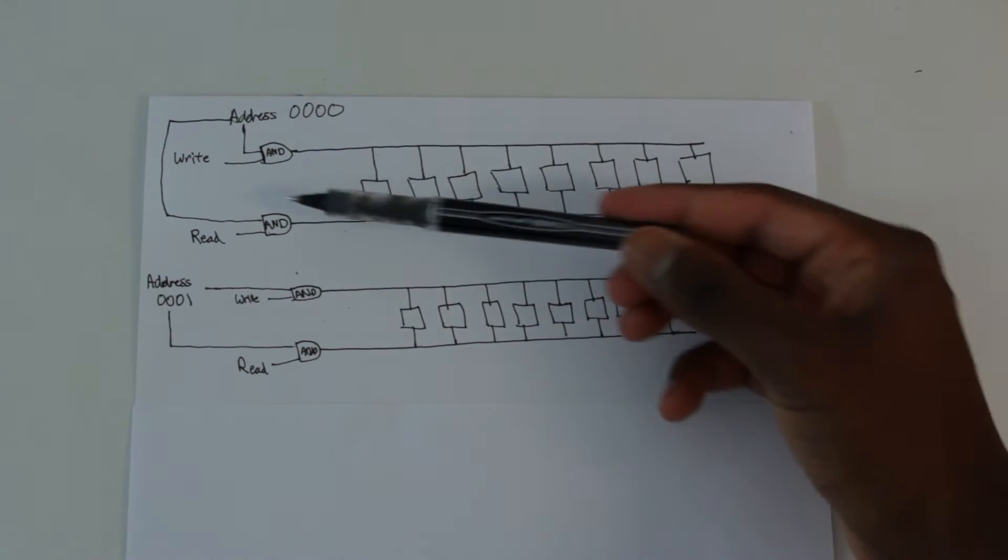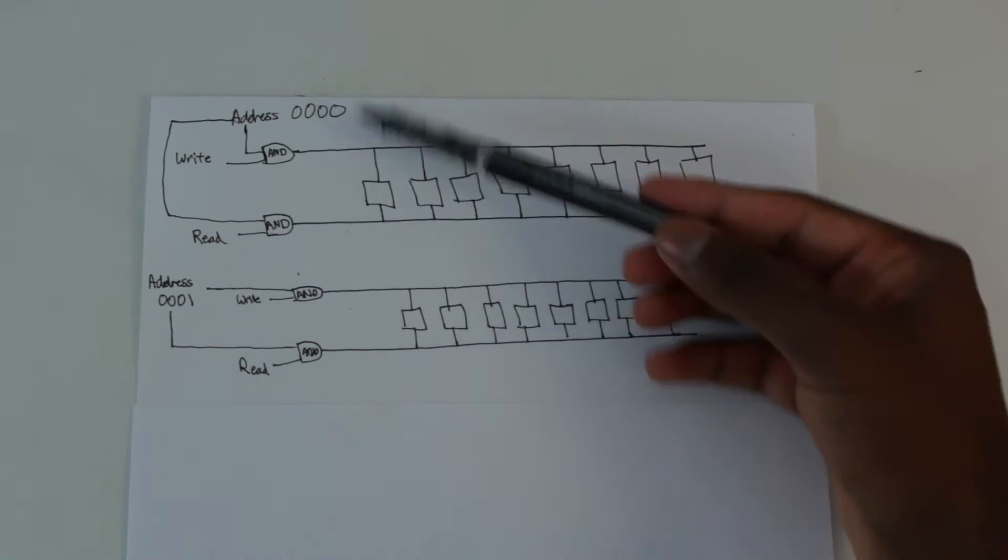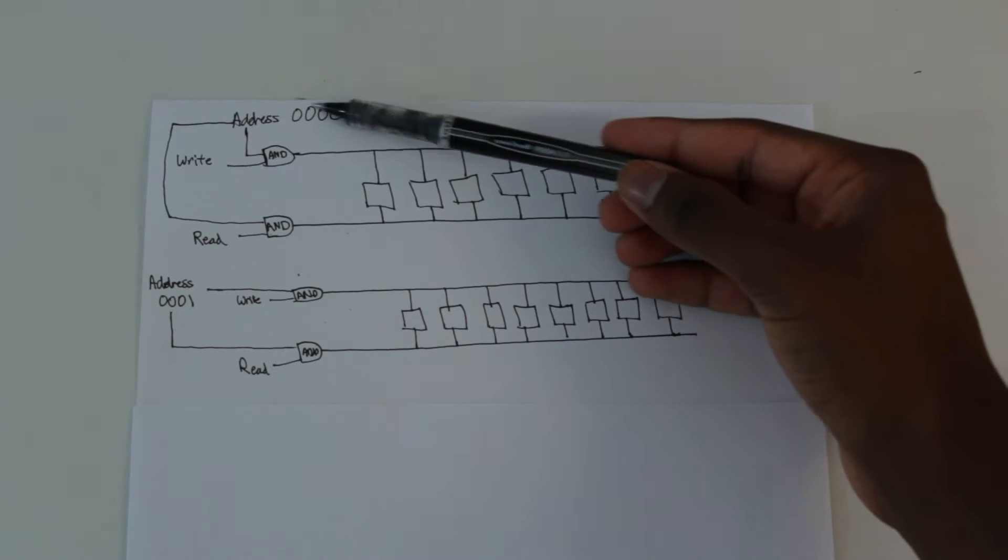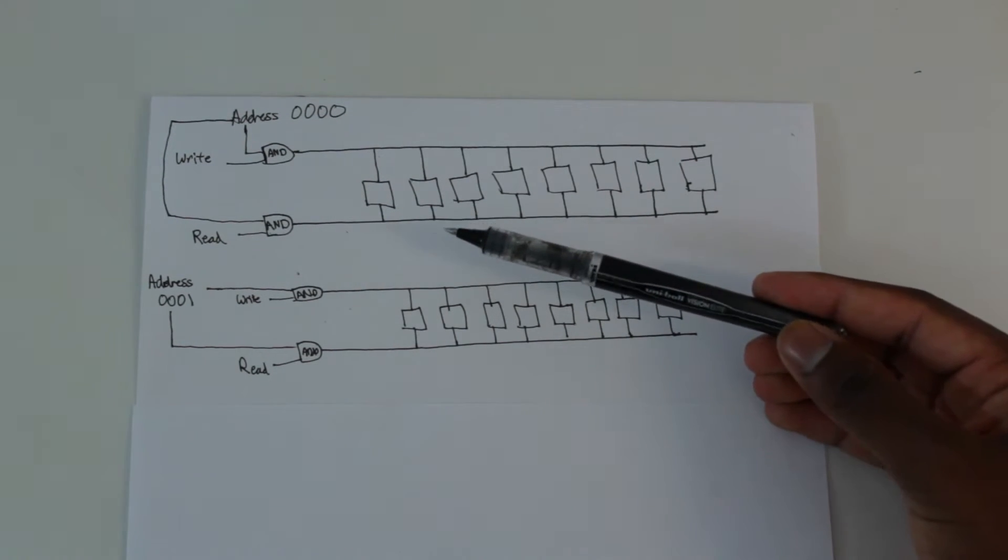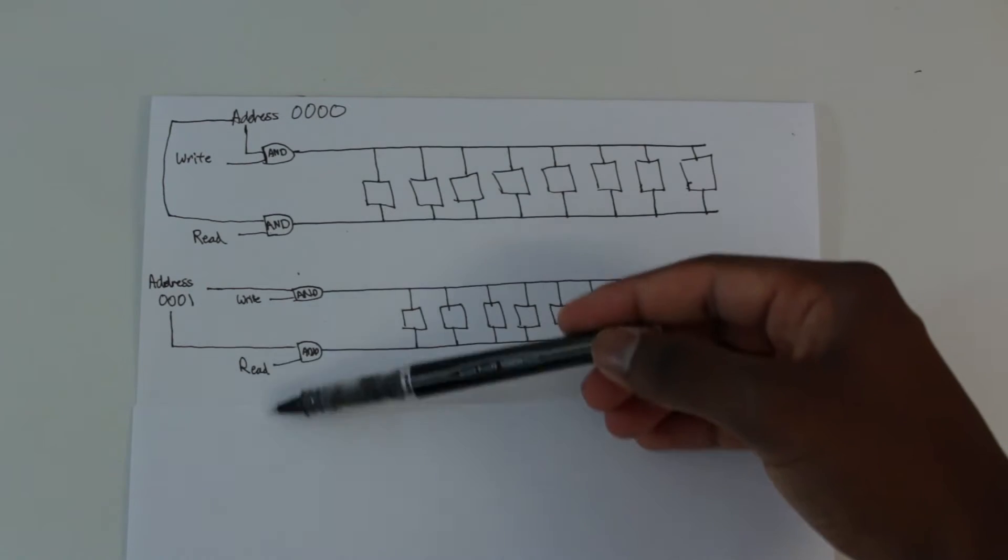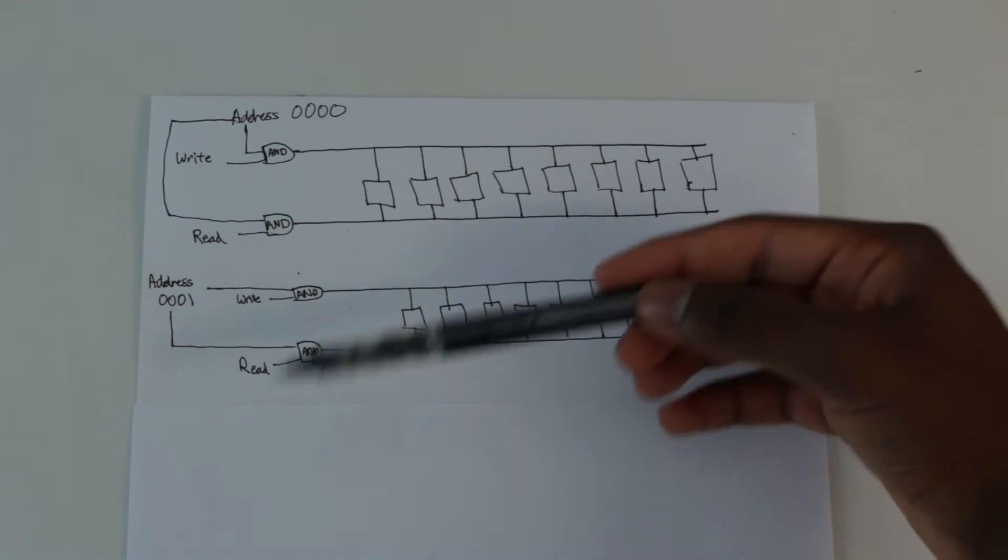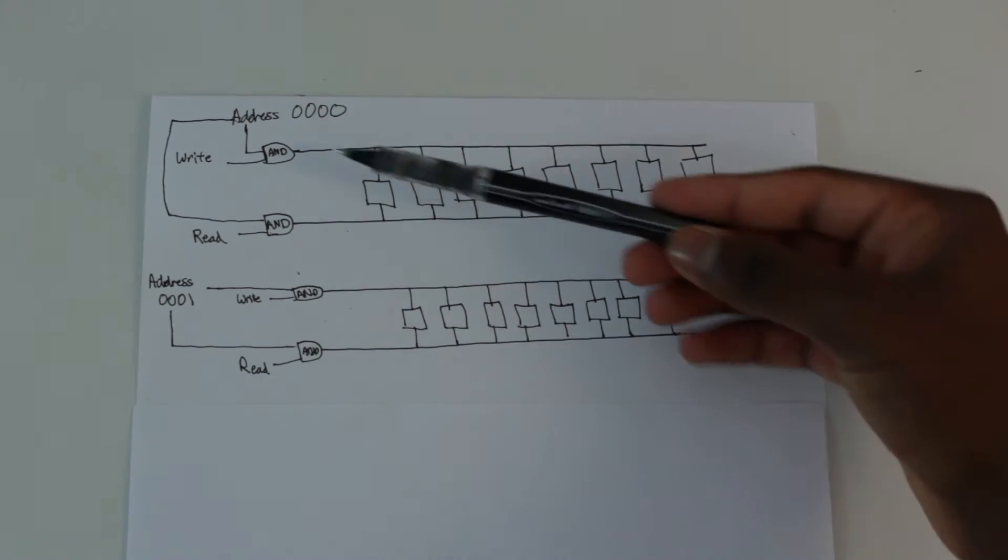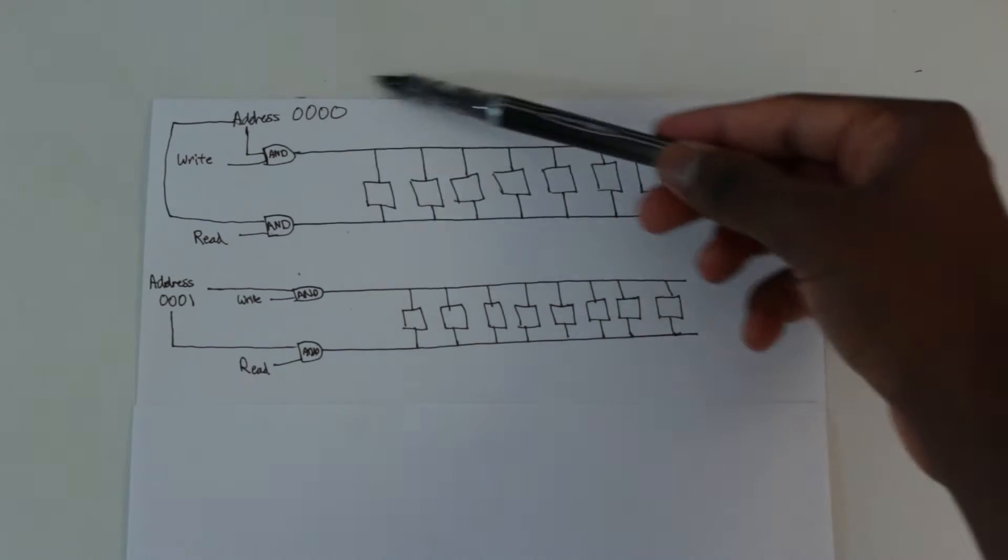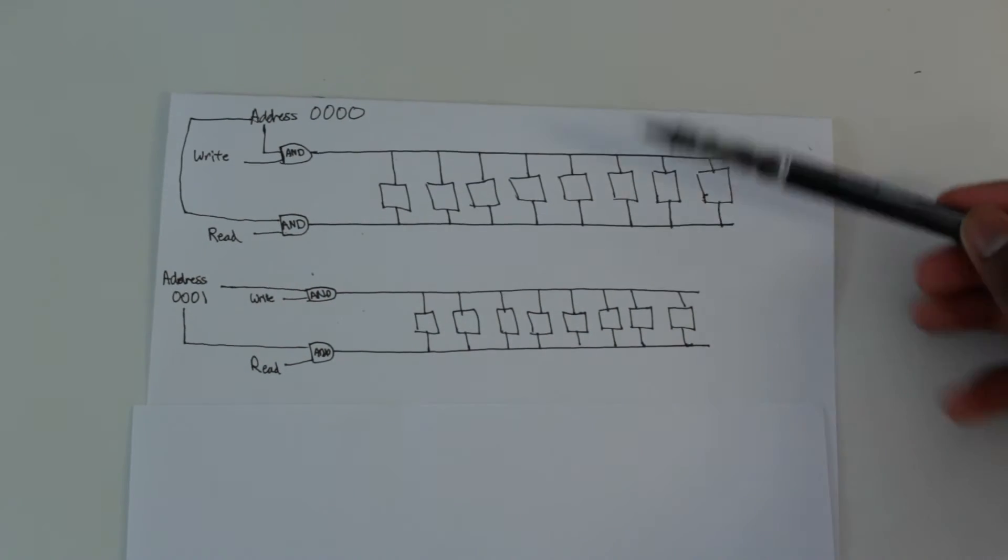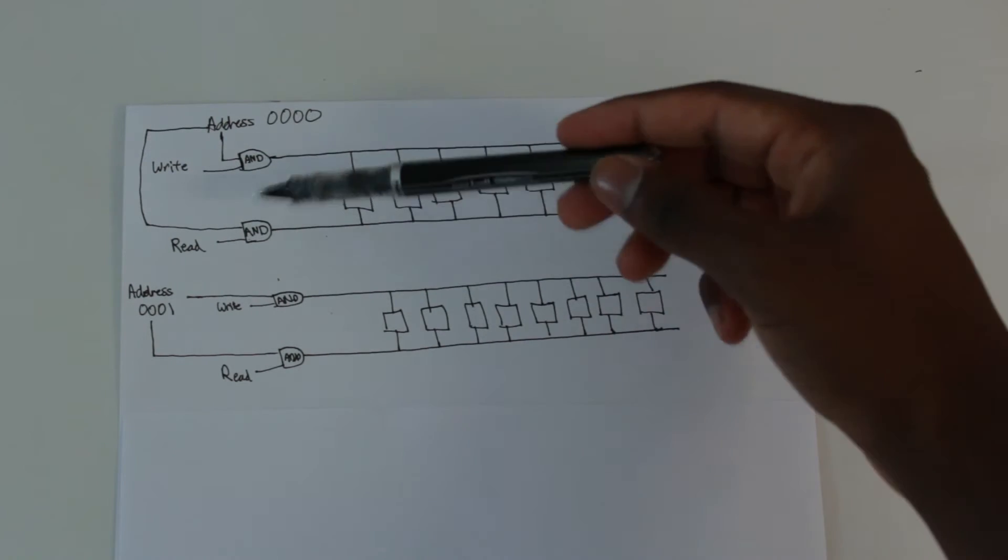And it's important to note that you can actually connect all these writes together and all these reads together. So if you have, say, 16 bytes of memory, which is exactly what you can have with a maximum for this address, you can have a maximum of 16 bytes. If you connect all the writes and the reads together, it won't matter, because even if you connect all the writes and reads together, you can still only interact with one because of this AND gate that says the address is choosing which one we want to interact with.